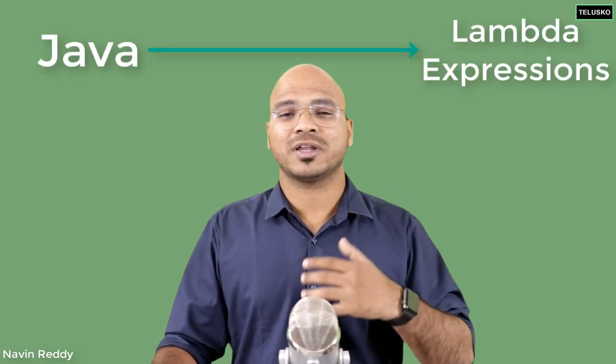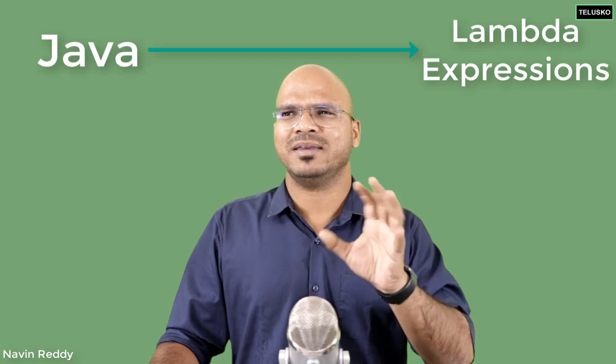You can't use one language everywhere. For different purposes we have different languages. For example, in the enterprise market, Java and C# have been running things for a long time. Yes, there are some drawbacks in Java — it is very verbose and has slow updates. In newer versions of Java, like Java 8, they tried to reduce that verbosity with things like anonymous classes and other improvements.